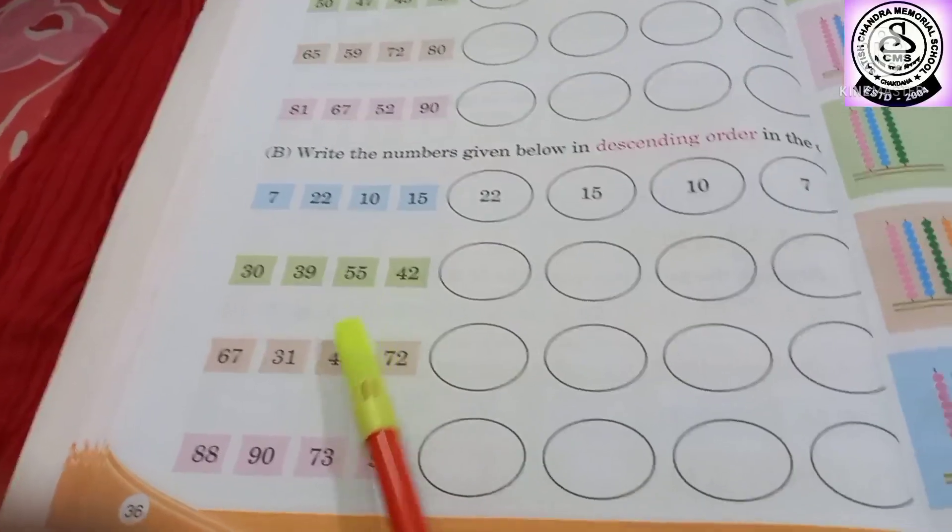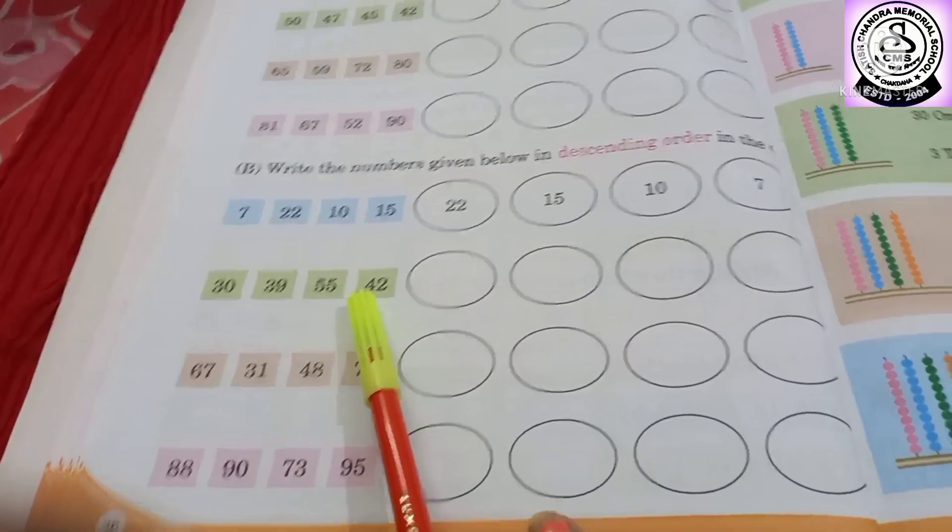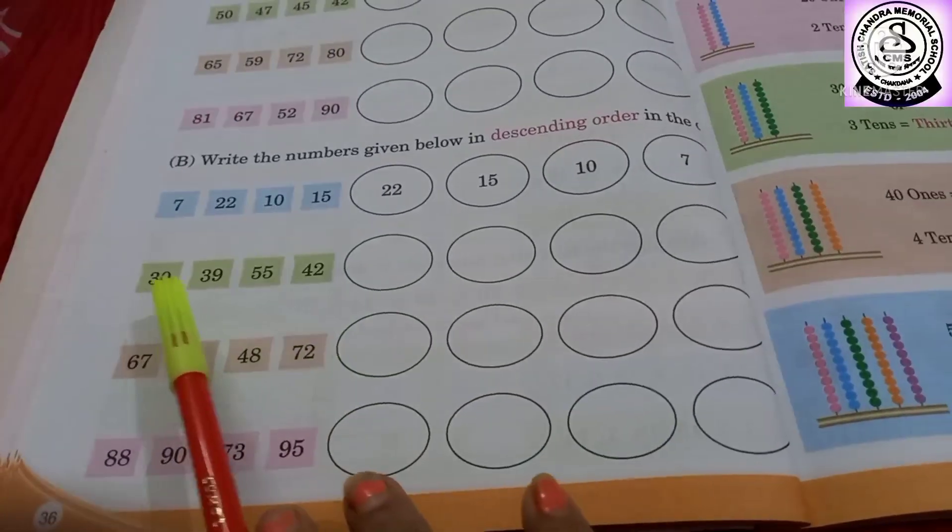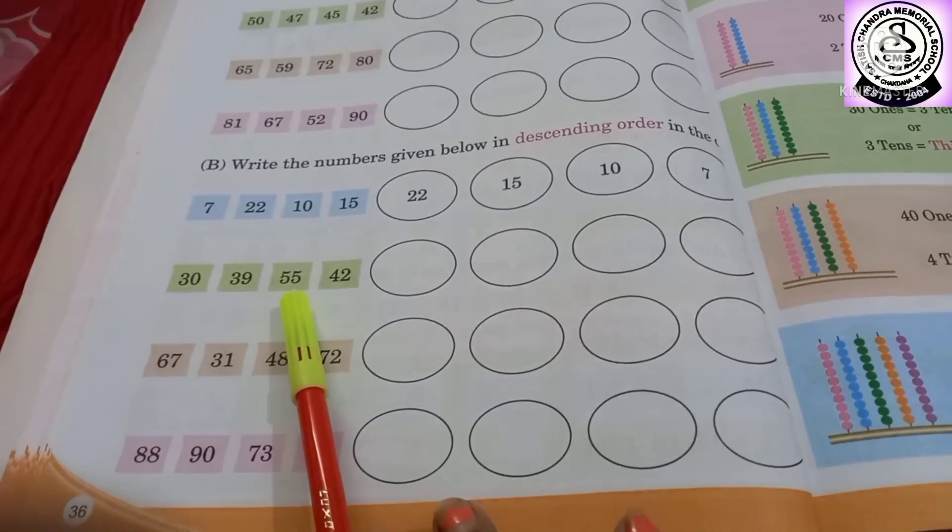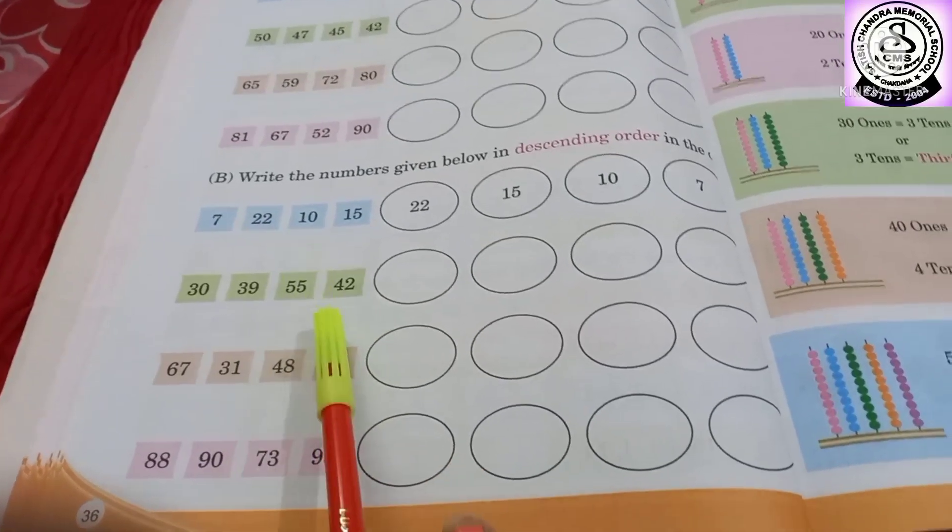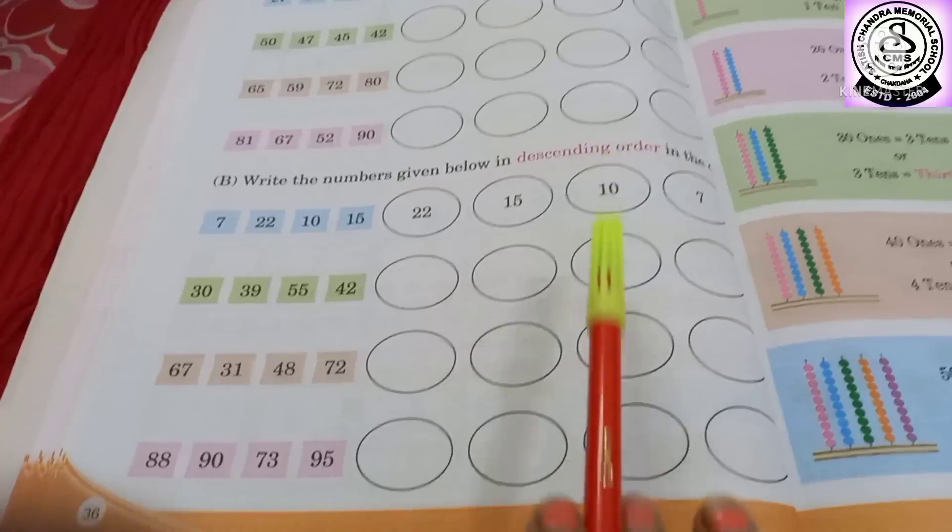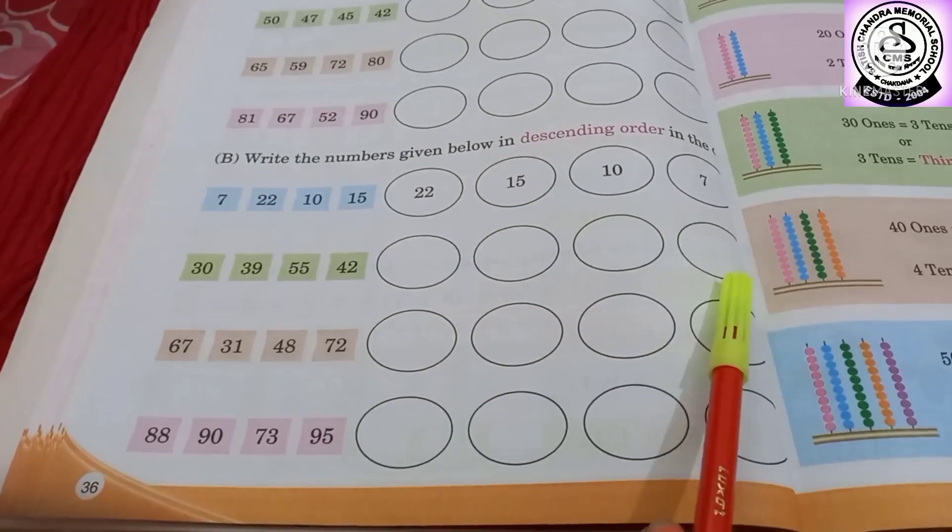And number 2, 3 and 4 is here. So now I am going to discuss number 2: 30, 39, 55 and 42. So which one will come first? So descending order means you have to arrange the numbers from bigger to smaller.